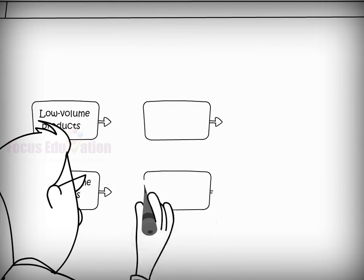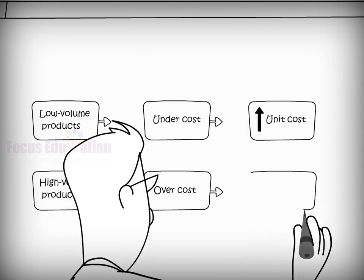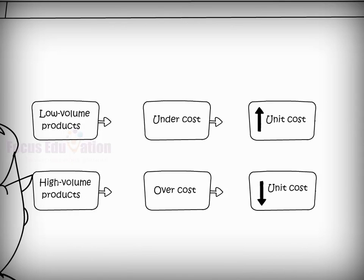The managers realized that ABC tends to increase the cost unit of low-volume products and decreases the unit cost of high-volume products.